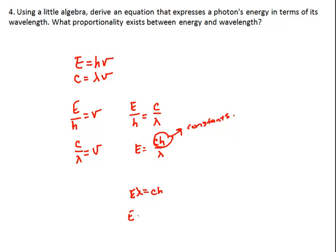Then we notice that as E goes up, lambda must go down. And as E goes down, lambda must go up. Therefore, E is inversely proportional to lambda.